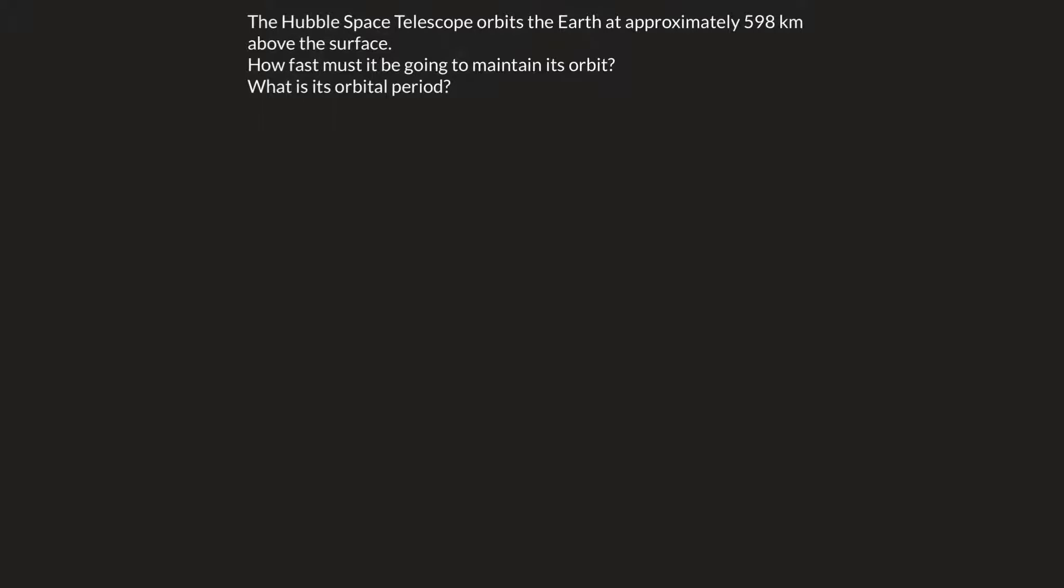Here's another practical example of satellites and orbits. We have the Hubble Space Telescope. It orbits the Earth approximately 596 kilometers above the surface. Remember that we're going to have to take that number and add it to the radius of the Earth for the total distance. We're going to ask how fast does it go to maintain the orbit and then determine the orbital period.